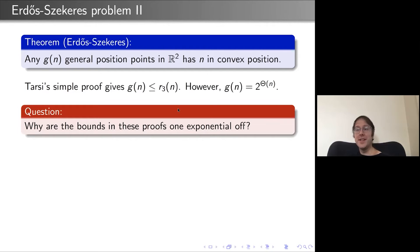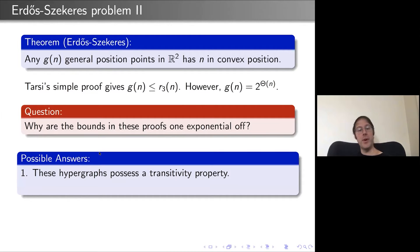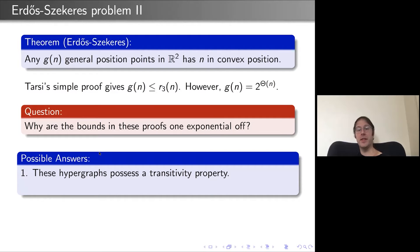Why are these bounds one exponential off when we apply Ramsey's theorem? One possible answer is that these hypergraphs possess a certain transitivity property. In the convex position example, points are ordered by x-coordinate: if X,Y,Z,W come in order and X,Y,Z and Y,Z,W are edges, then the other two triples are also edges. Similarly in the graph setting, if XY and YZ are edges with X < Y < Z, then XZ is also an edge.